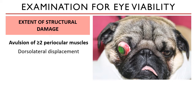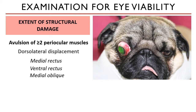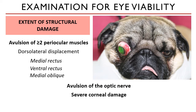A dorsolateral displacement means that the muscles holding the eye medially and ventrally are the first to lose their tension — these are the medial rectus, ventral rectus, and medial oblique muscles. At times the damage is so severe that the optic nerve is visible from the outside, but note this does not automatically mean the eye is non-functional. You must check the pupil for dilation, which is a sign of oculomotor and optic nerve damage. You also have to assess how severe the corneal damage is.